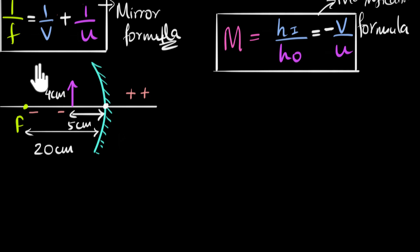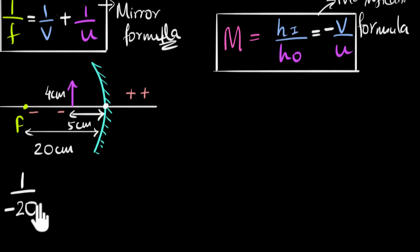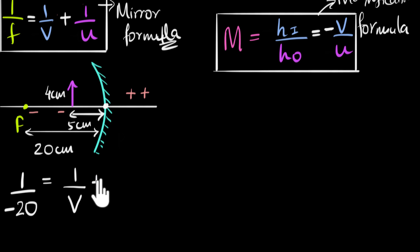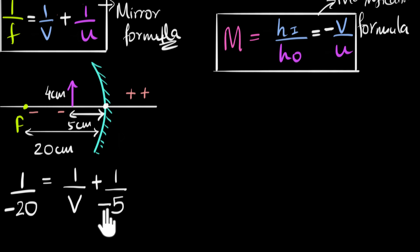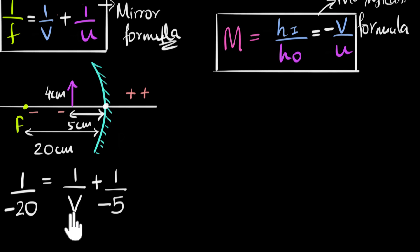Now let's substitute. One over the focal length: the focal length is 20 cm, but the principal focus is on the left side, so that's negative 20. That equals one over v — we don't assign a sign to v yet, we'll get it from the answer — plus one over u. The object is on the negative side, so u is minus 5 cm. Once we solve for v, a positive value means it's on the right side, and a negative value means it's on the left side.